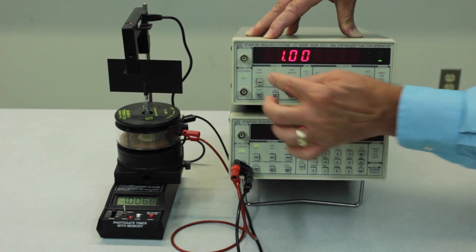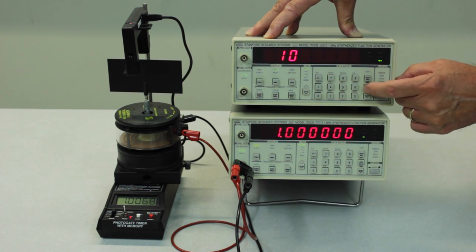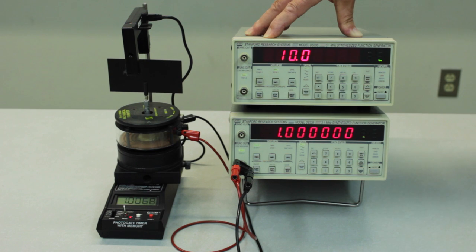And set the amplitude to 10 volts peak to peak, just to get it running properly. But otherwise it should be just fine. And that's all you need to know about calibrating the photo gate timer.